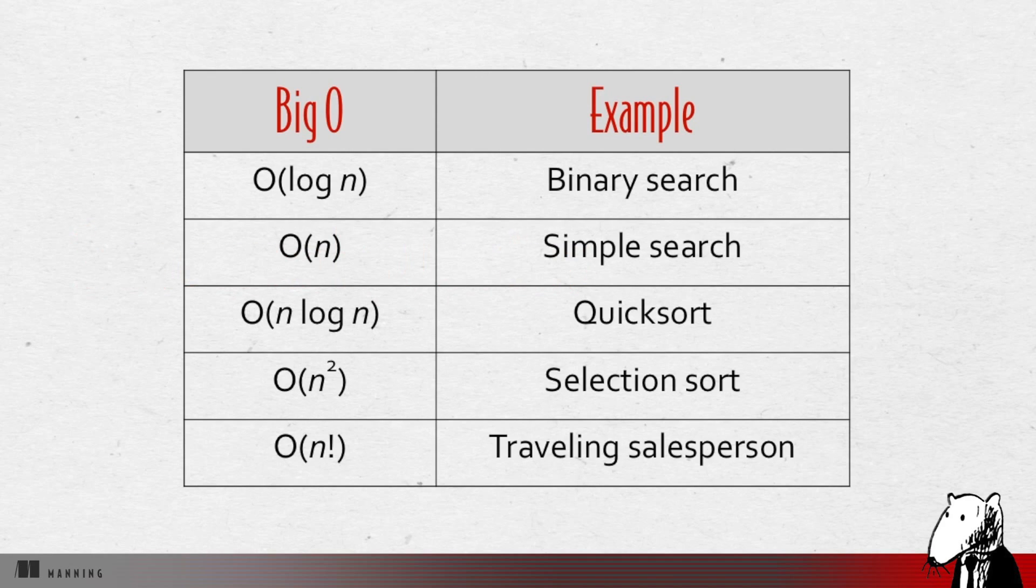Here are five big O run times that you'll encounter a lot, sorted from fastest to slowest. There's O of log n, also known as log time. An example is binary search. Then O of n, also known as linear time. An example is simple search. Next, O of n times log n. An example is a fast sorting algorithm like quicksort, which is coming up in unit four. Then O of n squared. An example is a slow sorting algorithm like selection sort, which is coming up in unit two. Lastly, O of n factorial. This is a really slow algorithm, like the traveling salesperson, which is coming up next.